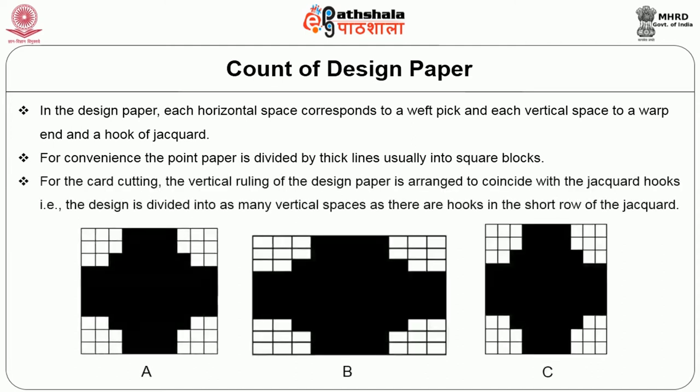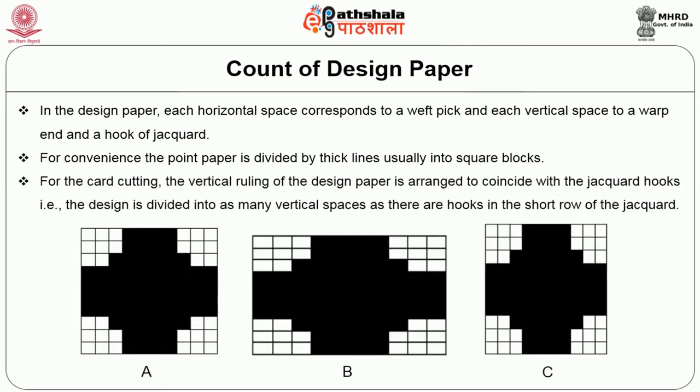For the card cutting, the vertical ruling on the design paper is arranged to coincide with the jacquard hooks. The design is divided into a number of vertical spaces equal to the number of hooks in the short row of the jacquard. For example, the design paper used for an 8-row jacquard will have 8 vertical spaces between each pair of thick lines.